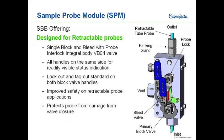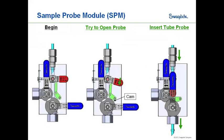For retractable probes, one of the longstanding problems has been operators closing the isolation valve with the probe still inserted, which can crush the probe and make it difficult to remove. In our design, there's an extra probe lock valve, and everything is interlocked. The key interlock is that you cannot shut the process valve unless you have first withdrawn the probe — so you physically cannot crush it.